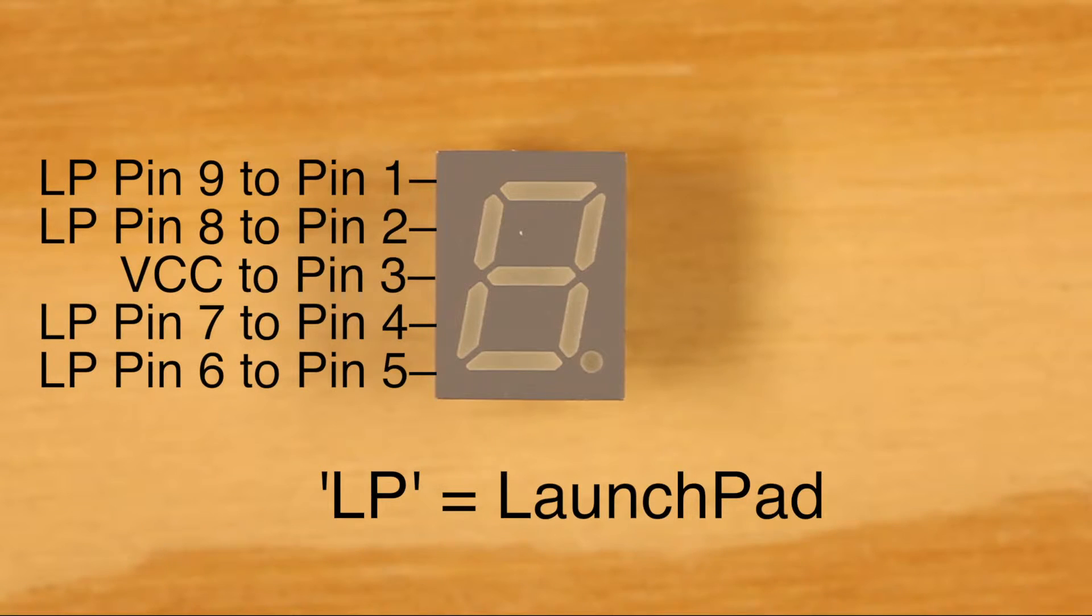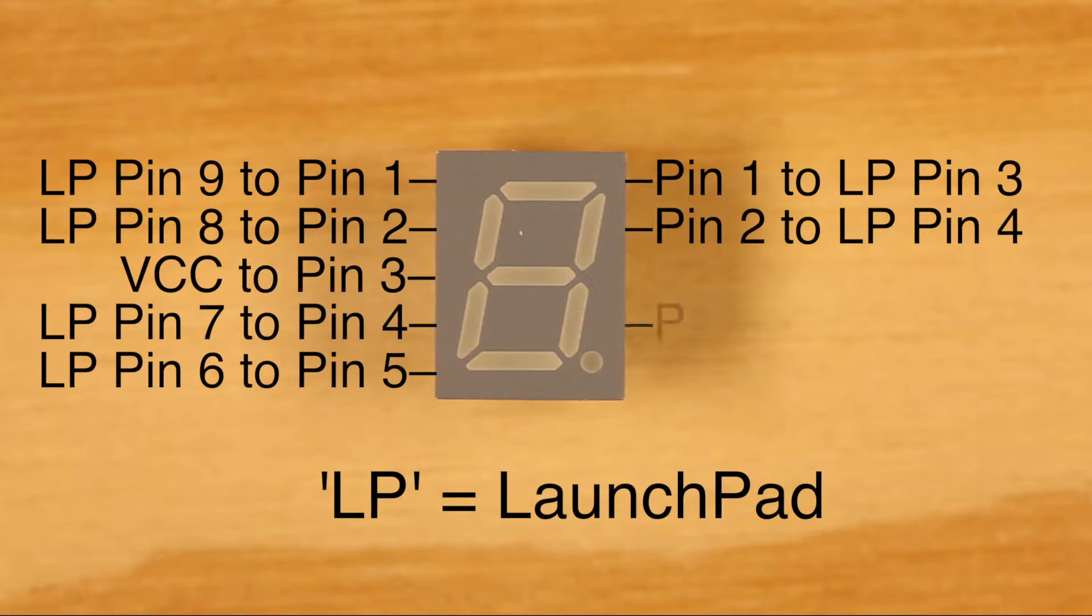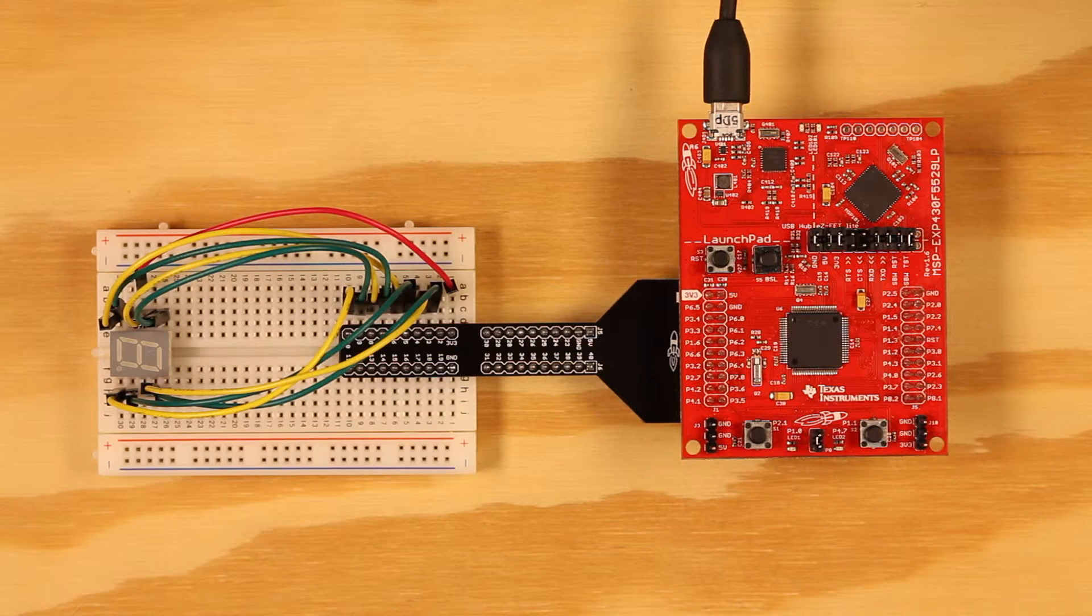On the right side of the segment display, connect the top pin 1 to pin 3 of the Launchpad, pin 2 to pin 4 of the Launchpad, pin 4 to pin 5 of the Launchpad, and pin 5 to pin 10 of the Launchpad. Use the included jumper wires to make the connections.